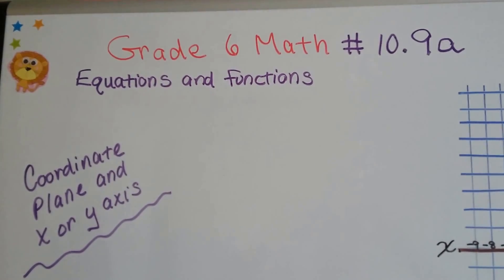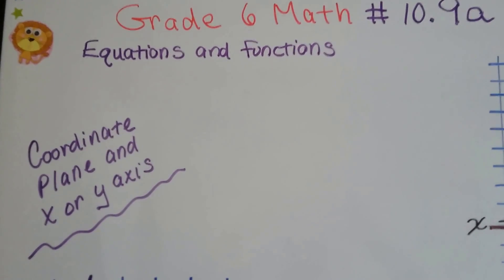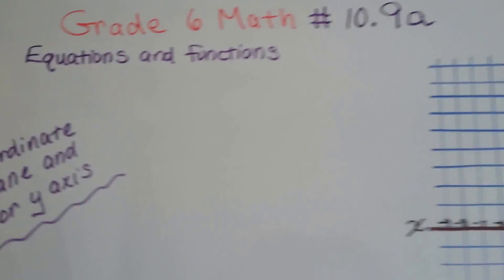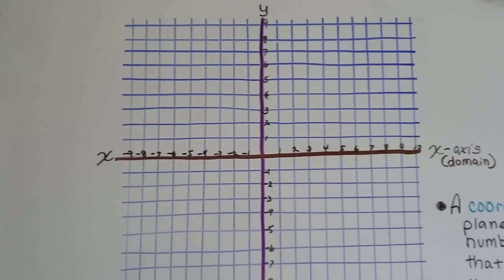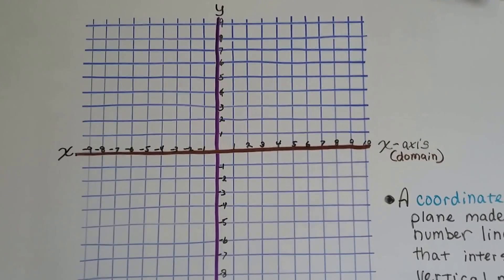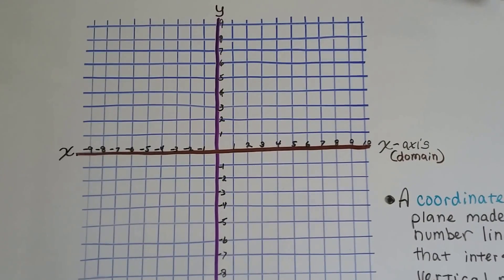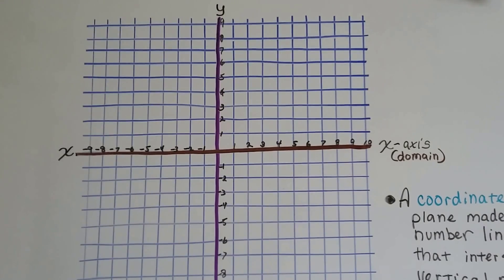Grade 6 math number 10.9a, coordinate plane and x or y axis. This is a coordinate plane. It's actually two number lines that are crossing each other, and they meet at zero in the very center. It's like a big plus sign.